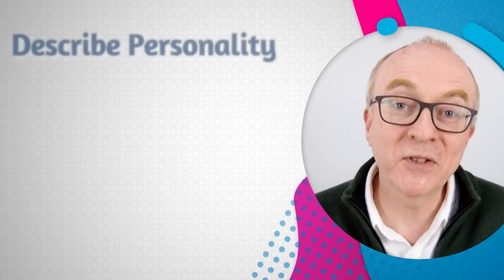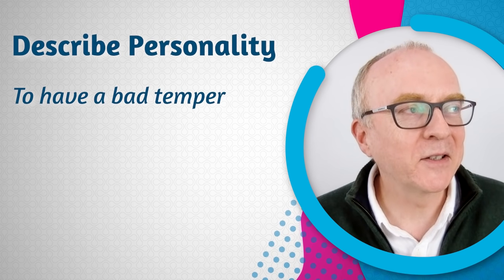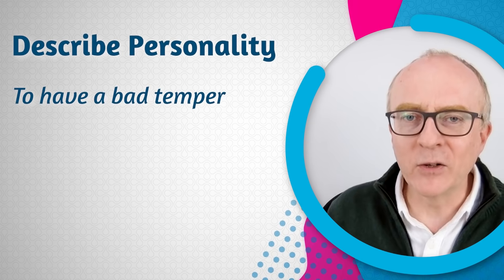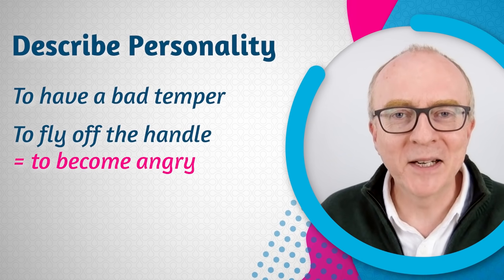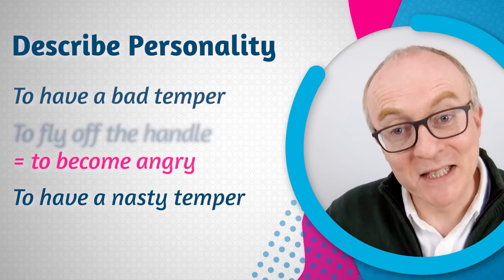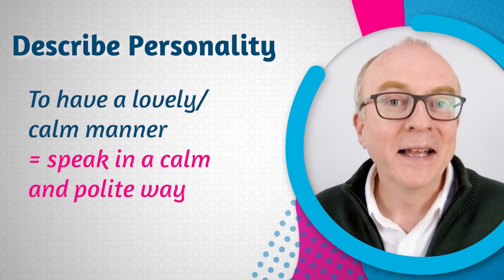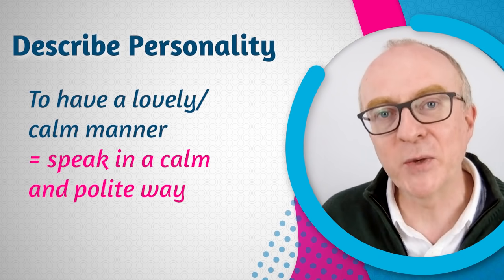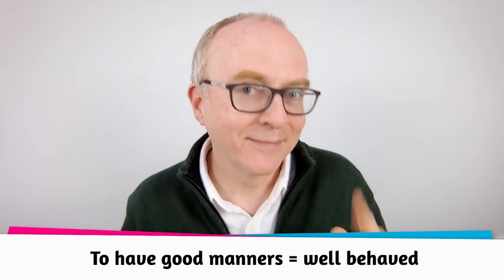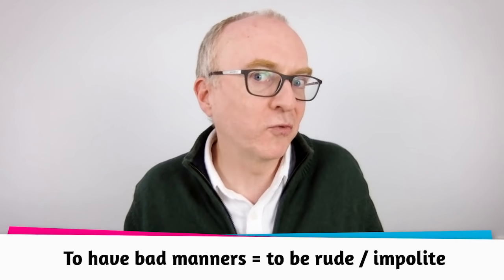Also, 'have' can be for describing our personality. She has a bad temper — it means she's always angry, always flying off the handle. She has a nasty temper. On the contrary, she has a calm manner, or she has a lovely manner — that means she speaks in a calm and polite way. Slightly different from 'to have good manners' in the plural: he has good manners means he's well-behaved; she has bad manners means she's rude or impolite.